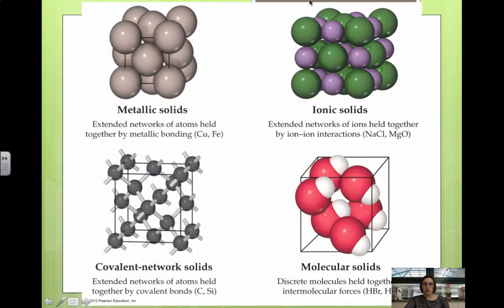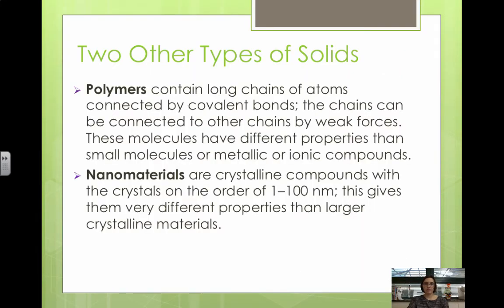This shows each of the four types. Metallic solids have the sea of electrons. Ionic solids have cations and anions held together by ionic bonds. Covalent network solids are extensive networks of covalent bonds. And molecular solids are held together by intermolecular forces — whether dispersion or even hydrogen bonding.